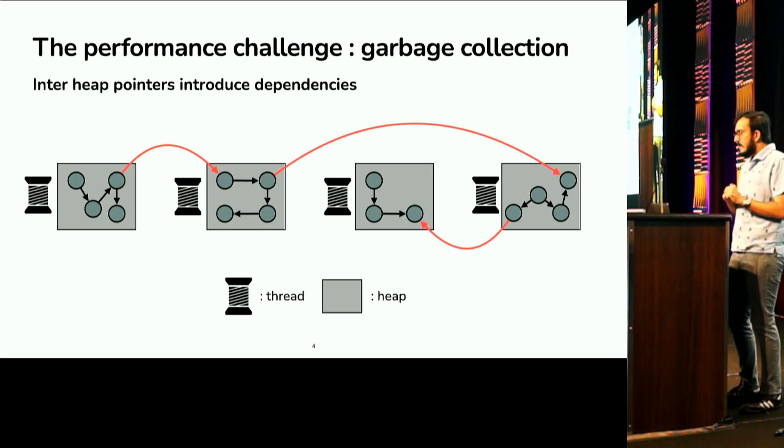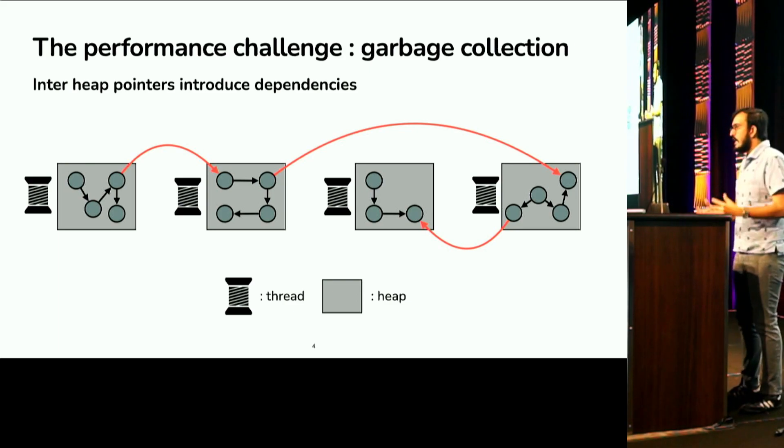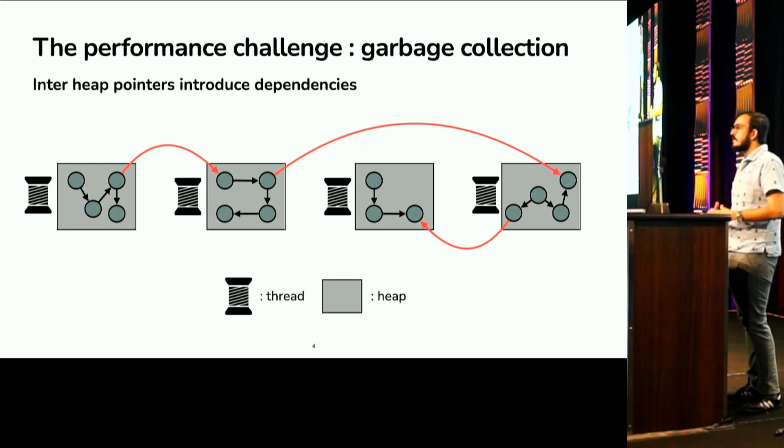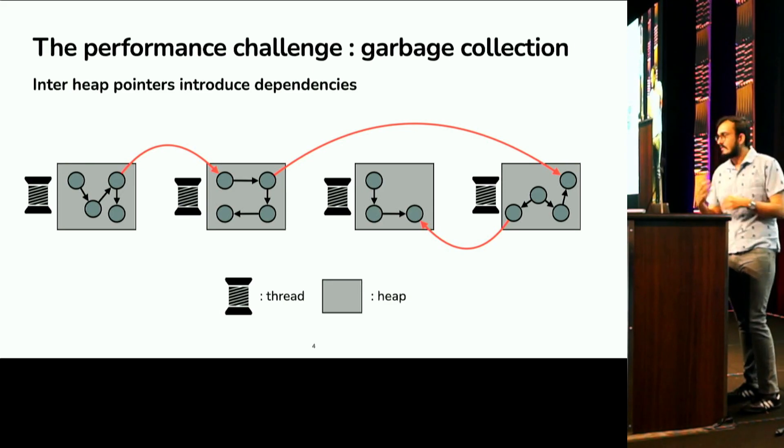The problem is that in real life programs, you have these inter-heap pointers between these heaps, which introduce dependencies for garbage collection. So now you have to introduce some form of communication between threads in order to figure out these inter-heap pointers and garbage collect. So this is the challenge for dealing with parallelism in GC.